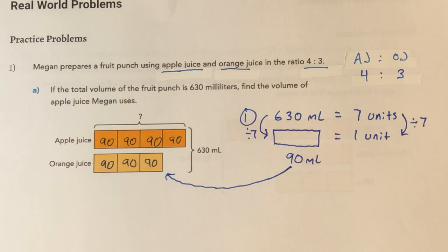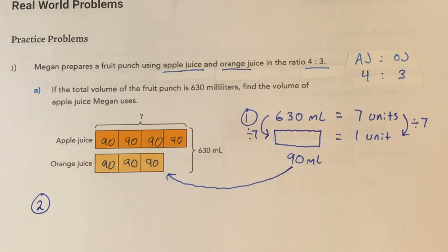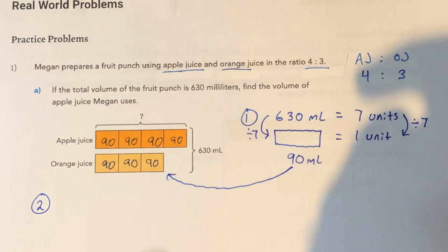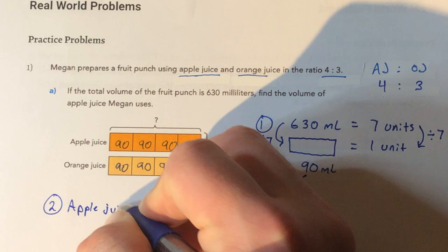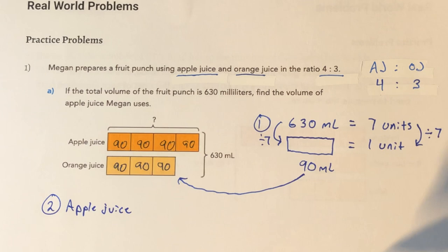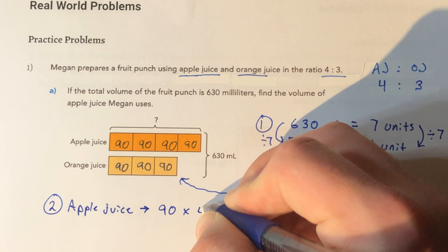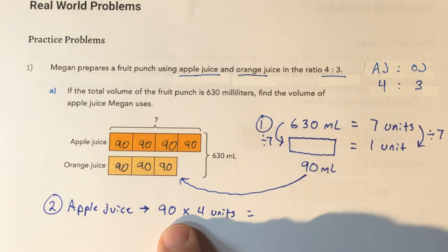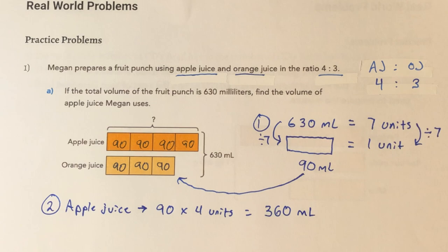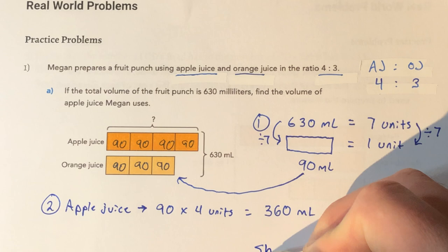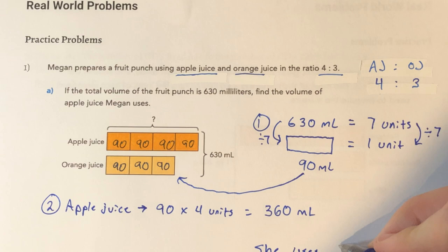Now I can find out whatever I want to know. My second step is to jump right towards getting the answer — find the volume of apple juice. Apple juice has 4 units, and each is worth 90 milliliters. So 90 times 4 units: 9 times 4 is 36, add that 0, and I get 360 milliliters. That's apple juice and that's what I want. So we're going to write our answer: she uses 360 milliliters of apple juice.